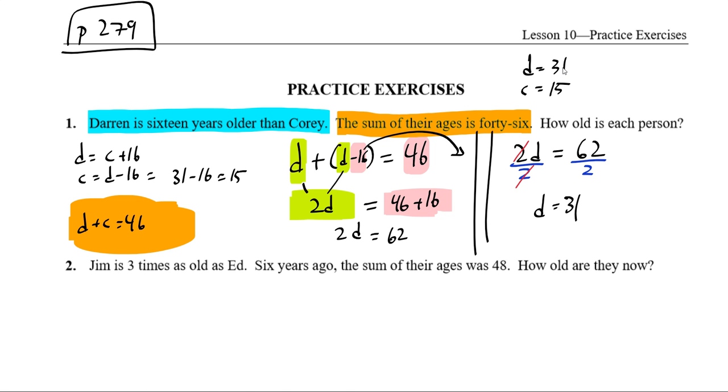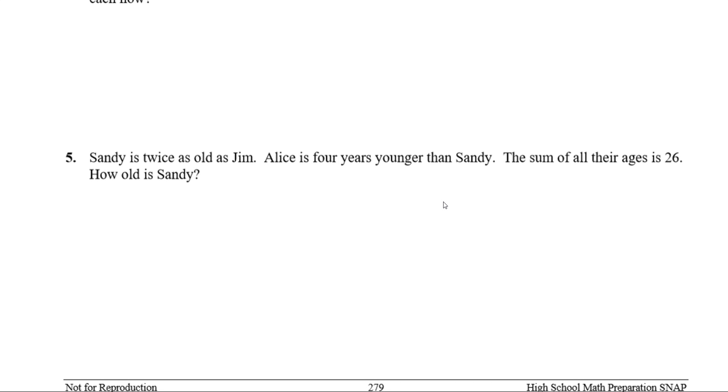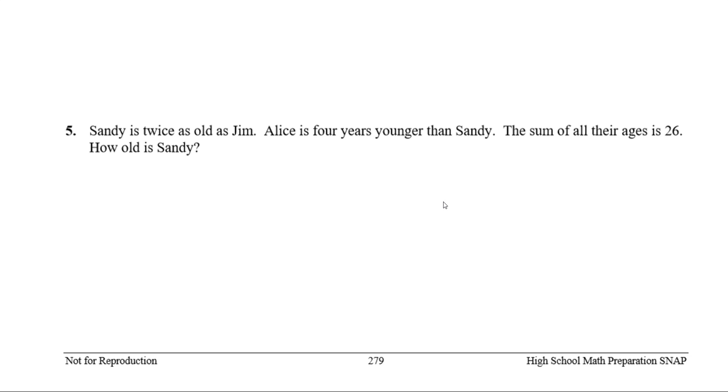Let's do another. Sandy is twice as old as Jim. Alice is 4 years... We got Sandy, Alice, and Jim. Those are our three people. One statement to tell us is Sandy is twice as old as Jim. We can write that out as Sandy's age equals double Jim's age, or we can say that Jim's age is Sandy's age over 2. He's half as old as Sandy. Either one of those can work.